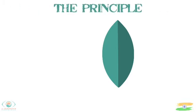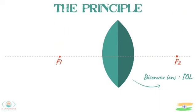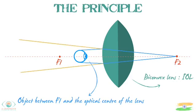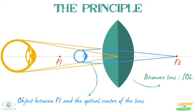Let's look at the principle of a biconvex lens. The biconvex lens has two focal points, f1 and f2. When an object is placed between f1 and the optical centre of the lens, it subtends an image which is virtual, erect, and enlarged.